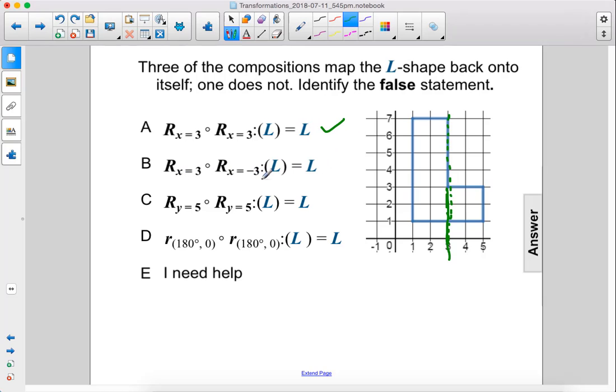But here we have negative 3, which would be like a line over here. So if we first reflected it over this line and then that line, the L would not be in the original position. So the answer to this problem is B.